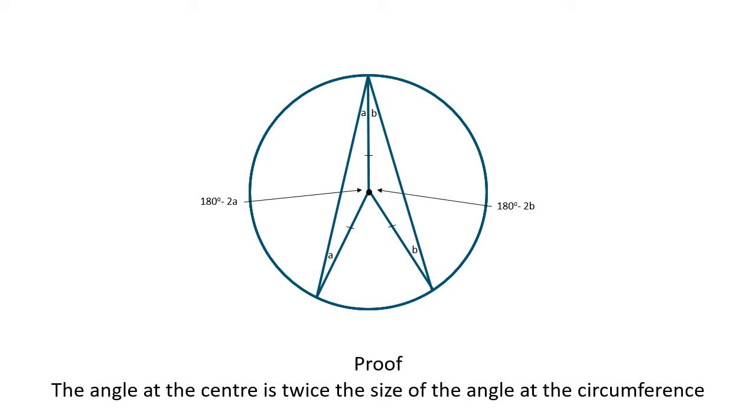The angle around a point is 360 degrees, so the angle we need is 360 minus 180 degrees minus 2a and 180 degrees minus 2b.